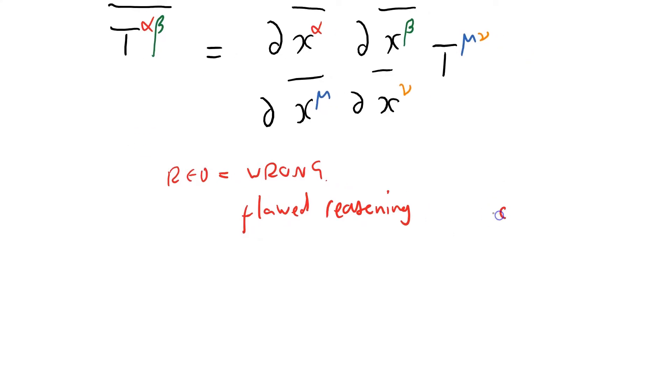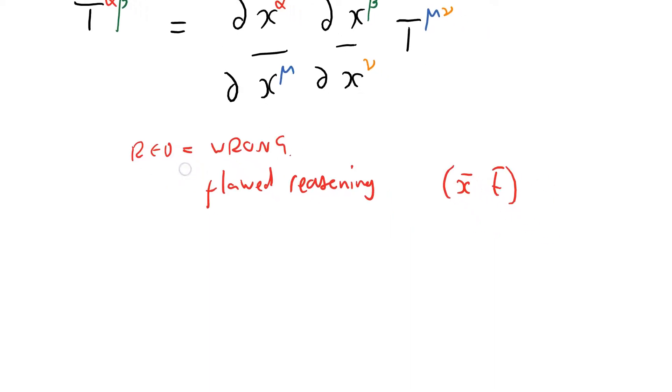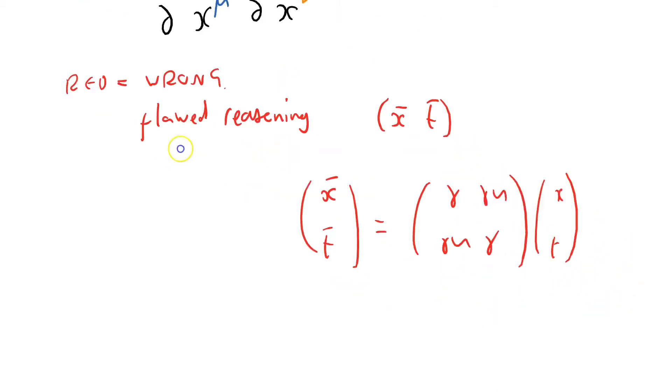The barred frame, we've got an x-bar and t-bar reference frames, and that's going to be linked to the unbarred reference frame by a bog-standard Lorentz transform. And sometimes I'll write that down as this, ij, as a 2x2 transformation matrix.